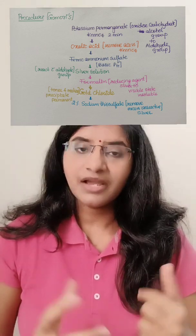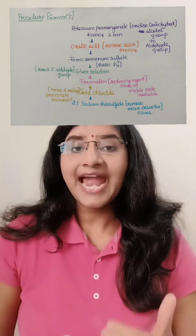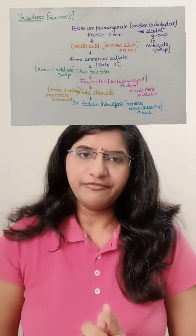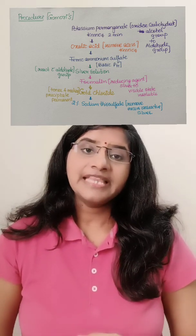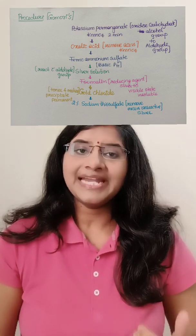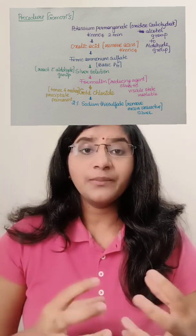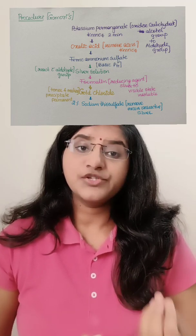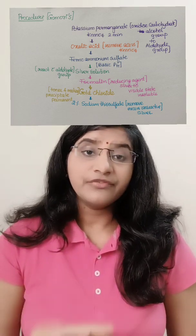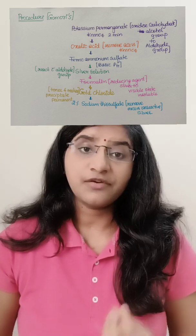Next, you want to add something that gives a basic pH, because only then will your silver salts react and precipitate — remember the principle. So to make a basic pH we add ferric ammonium sulfate. Then we add the silver solution, which gets converted into metallic salts. However, those metallic salts are not visible to the naked eye, so we add formalin, which is a reducing agent that converts those metallic salts and helps them precipitate so we can visualize them under microscopy.